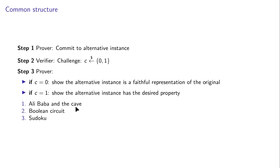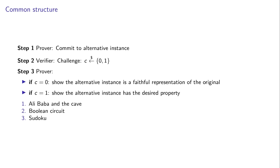I want to close this part by mentioning Alibaba and the cave, which has a resemblance to the prover structure. We can generalize the idea of the Hamiltonian cycle and bit commitments to show that a boolean circuit is satisfiable. There are also examples in the literature of zero knowledge using Sudoku, which follows a similar idea, though showing that the alternative instance is faithful is more elaborate — which is why I prefer not to use it as the primary example.